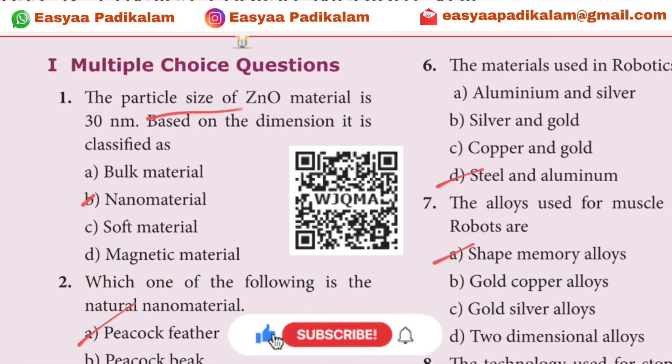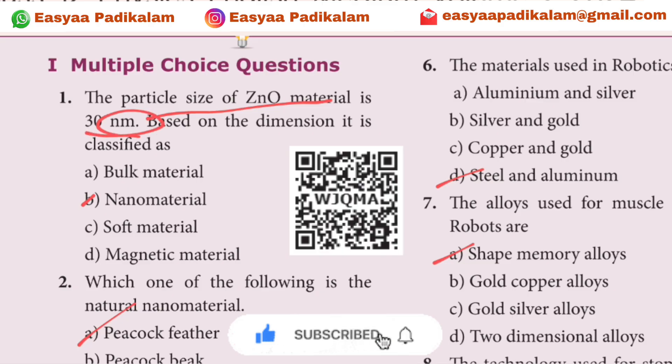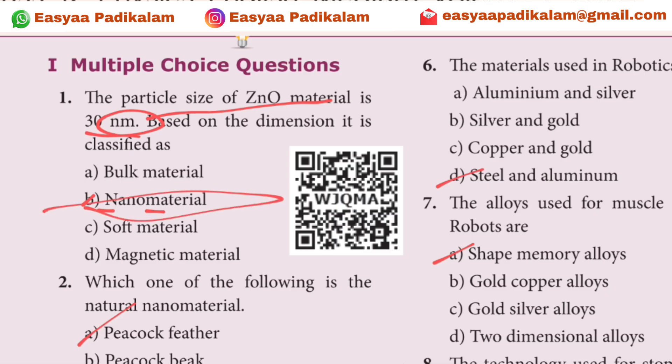The particle size of ZnO material is 30nm. N for nano, M for material. Let's choose nano material.